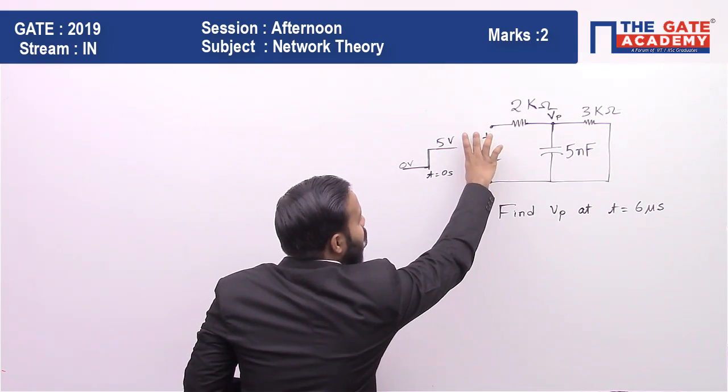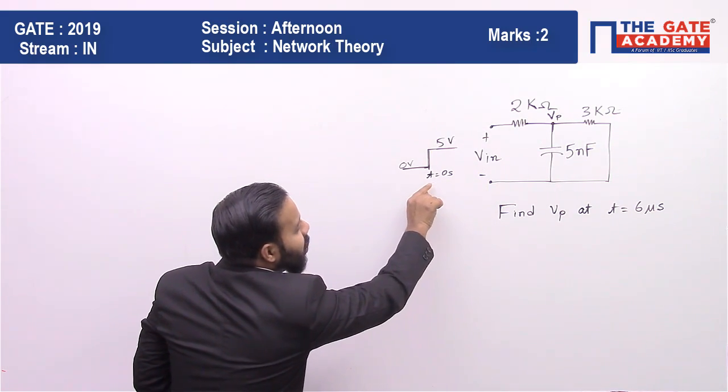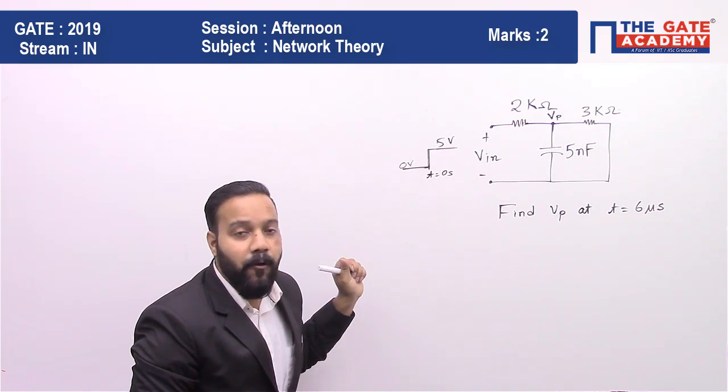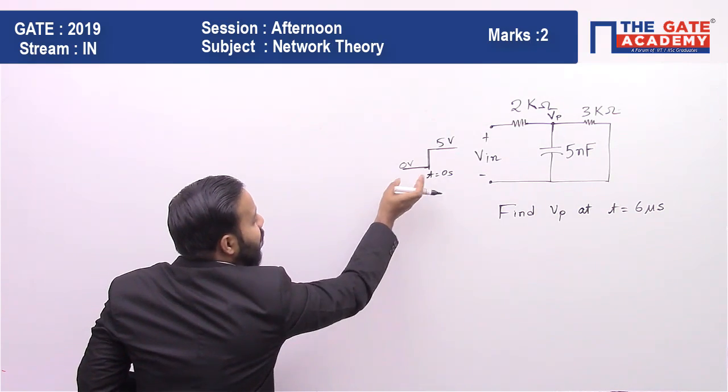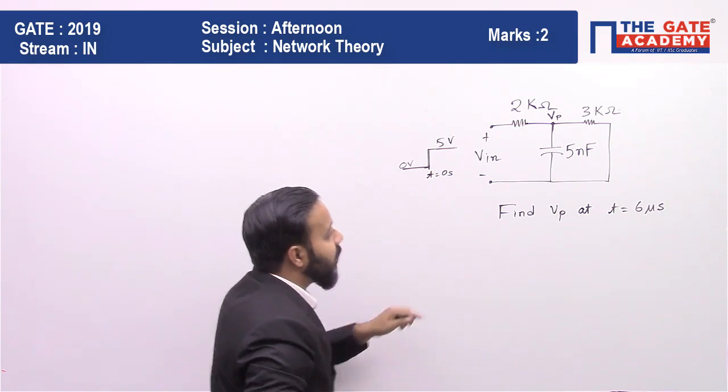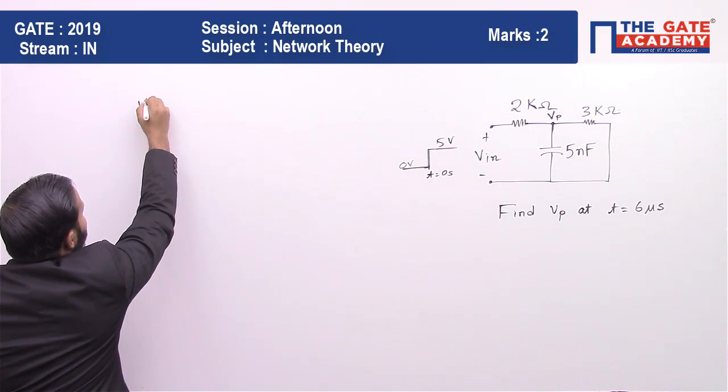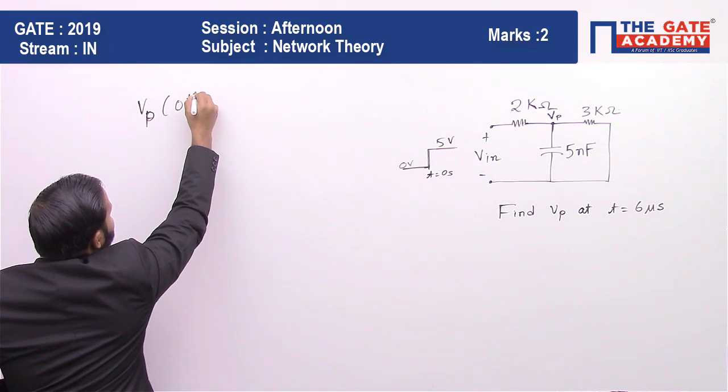What is the voltage at the input terminals? We can see at time equals to 0, the voltage is shifting from 0 volt to 5 volt. So until t equals to 0 seconds, it was 0 volt, which means vp was at 0 already.